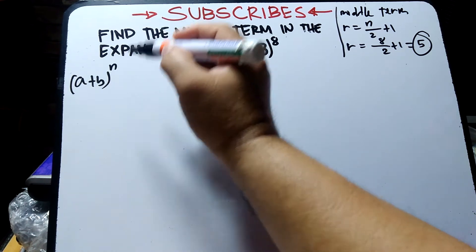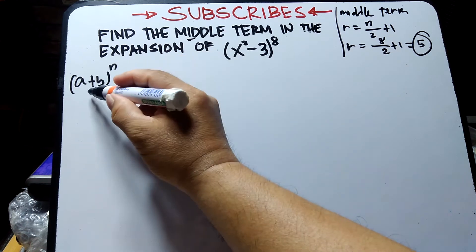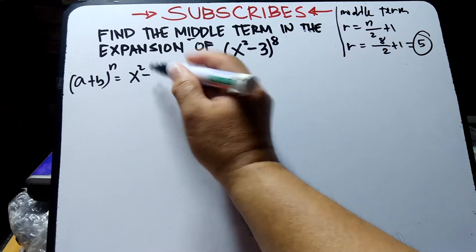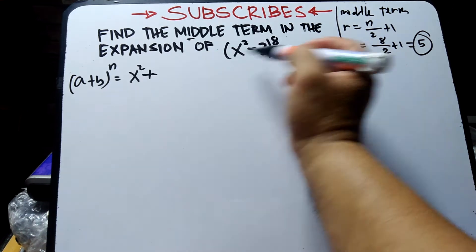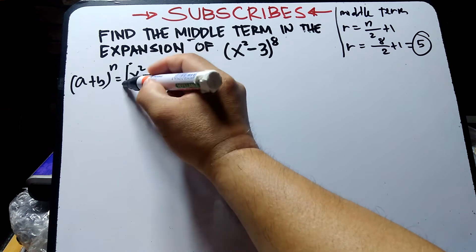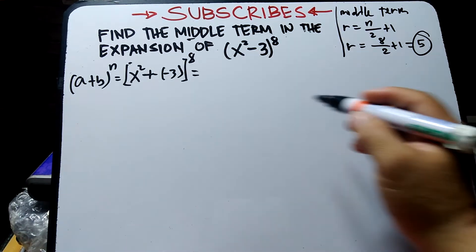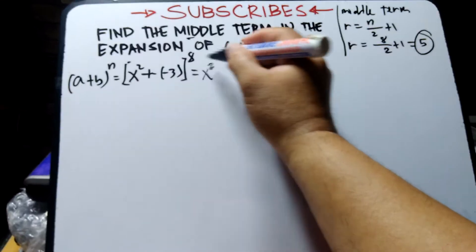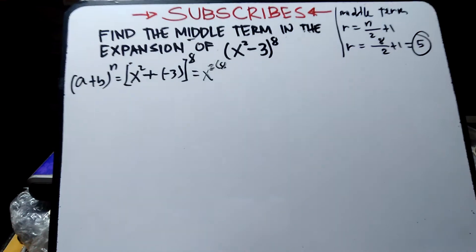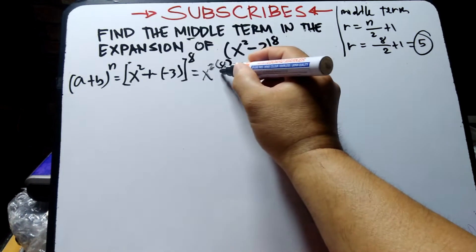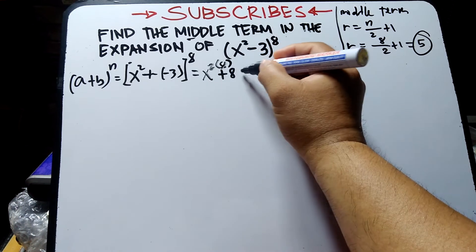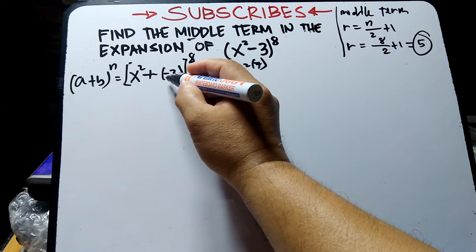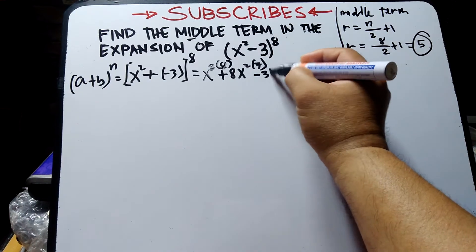Using the binomial formula (a + b)ⁿ, we have (x²)⁸ + (-3)⁸. Then expand: x² times 8, then times 8 minus 1 which is 7, multiply by -3 raised to 1.